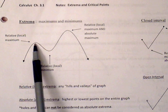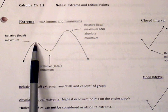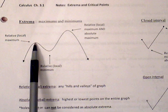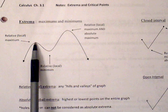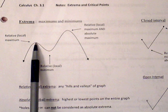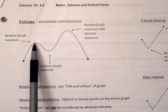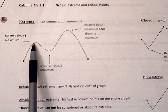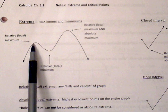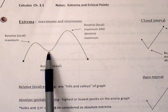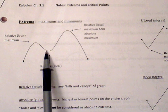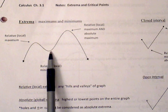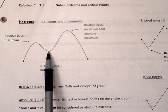We call it a relative or local maximum at this point because this maximum is relative. It's going to be maximum relative to the immediate points to the left and to the right of the graph. And this is a relative minimum because compared to the points immediately to the left and to the right, it is lower than those points.